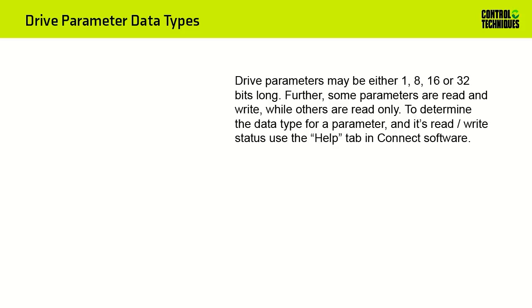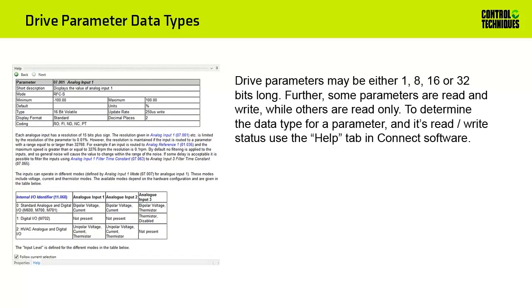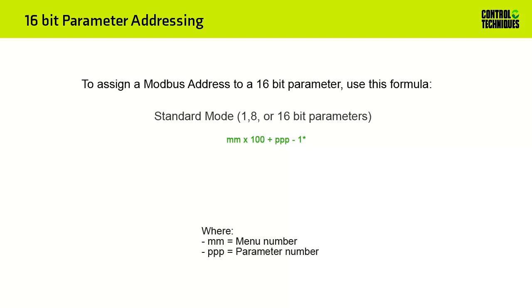Some parameters are read and write while others are read only. To determine the data type for a parameter you'd like to access using Modbus and its read-write status, refer to the Help tab in Connect Software as shown here. This is menu 1, parameter 21. The first thing you'll notice is its type — this particular parameter is 32 bits long. In the coding field, you'll see the abbreviation RW, meaning the parameter is read and write. To assign a Modbus address to a 16-bit drive parameter, use these formulas.